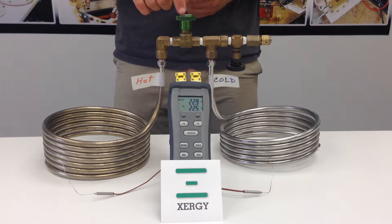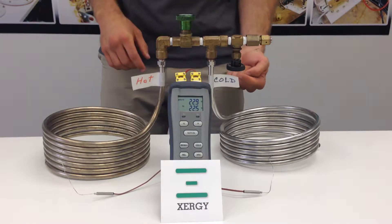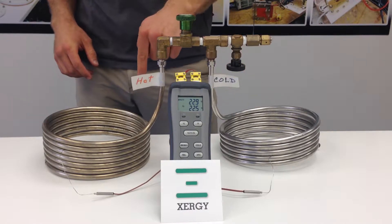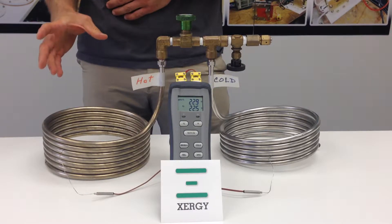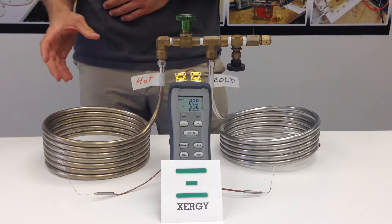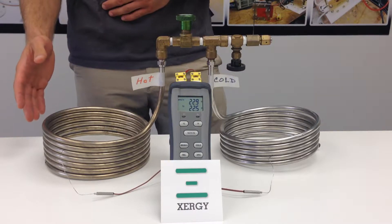When I release this valve, hydrogen will travel from the high pressure side to the low pressure side. As hydrogen bonds with the alloy on the low pressure side, it creates an exothermic reaction which will cause this coil to become hot.